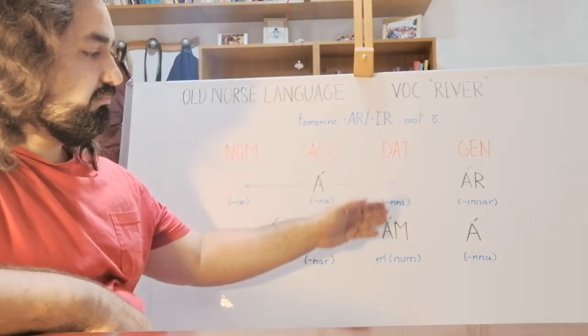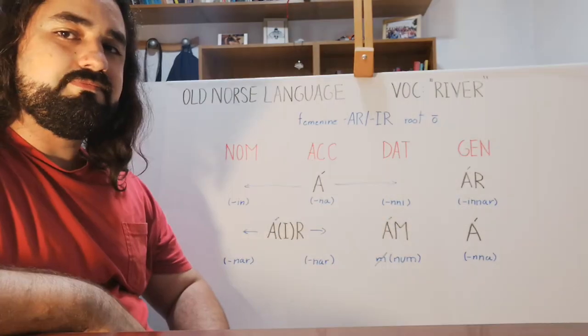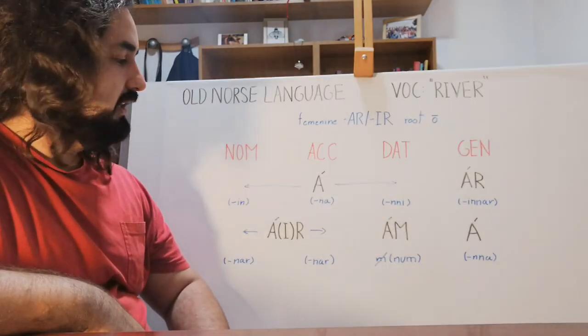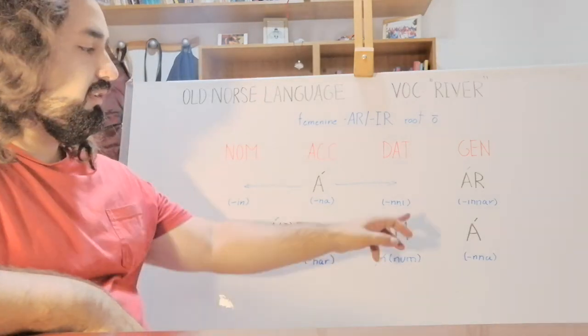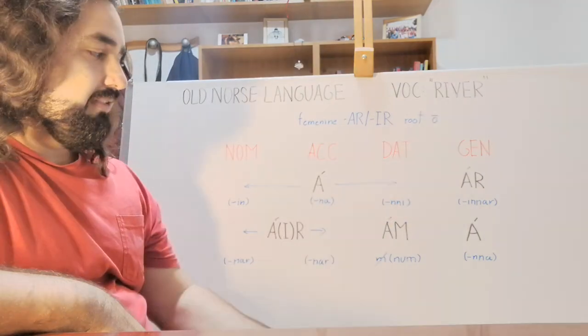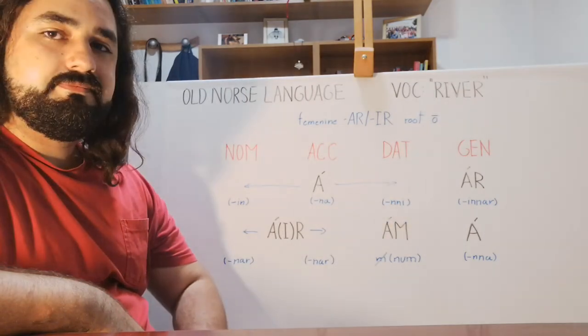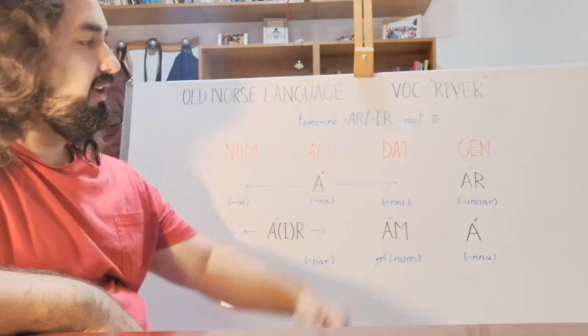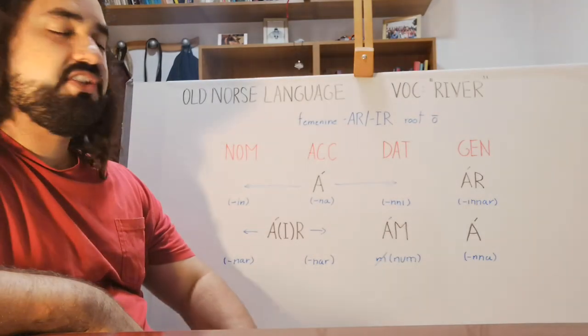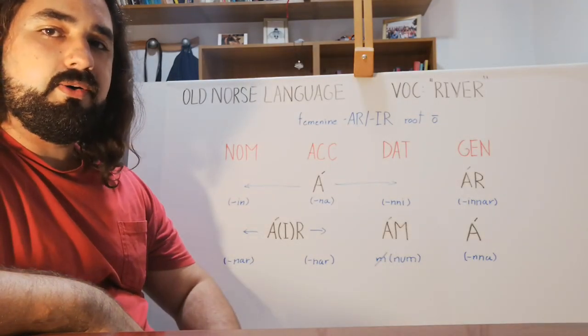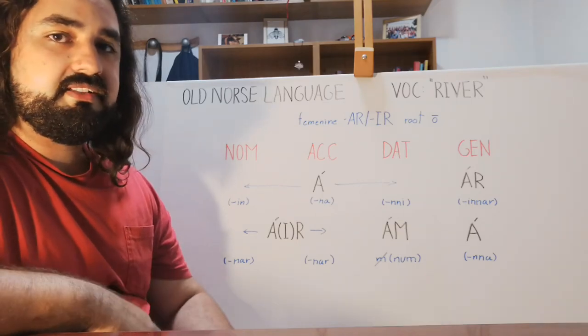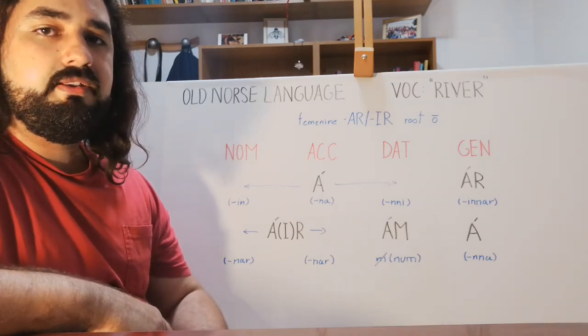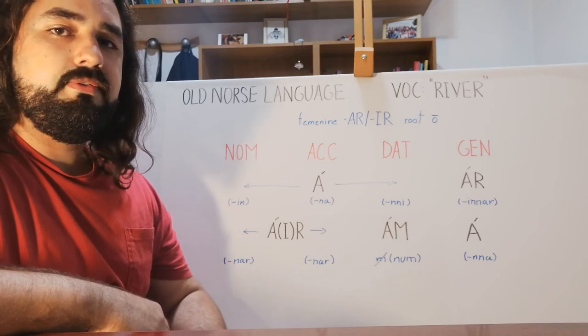Now you have the dative plural form, ám. But when we add the article at the end, we have to eliminate that M and add ánum. And then we have the final form of genitive plural, á. And with the article suffixated, it will be ánnar.